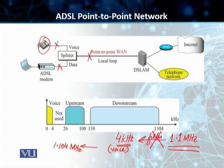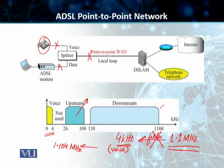Out of this 1.104 MHz, the 0 to 4 kHz is used for voice. Then the rest of it you can use for an upstream channel for your uplink data communication. And then you can have the 138 kHz to about 1.104 MHz — or 1104 kHz — used for your downstream channel. ADSL allows the subscriber to use the voice channel and the data channel at the same time. In dial-up, this was not possible.